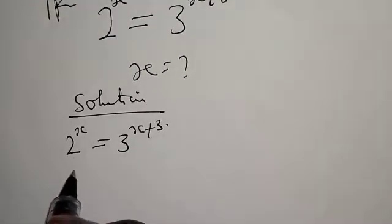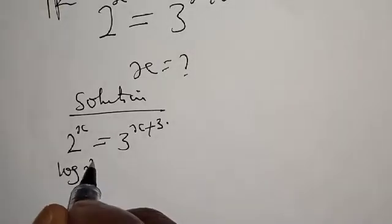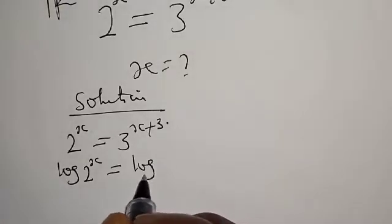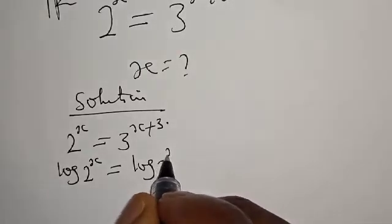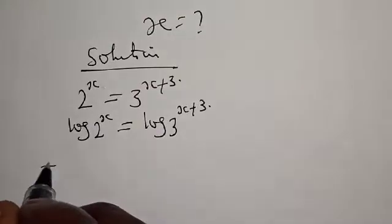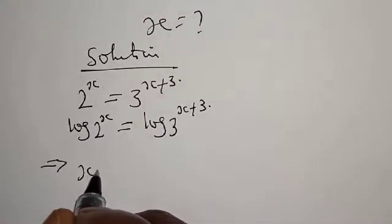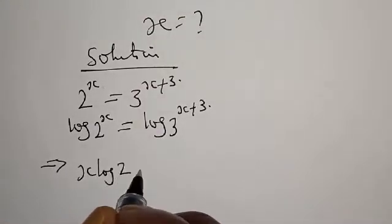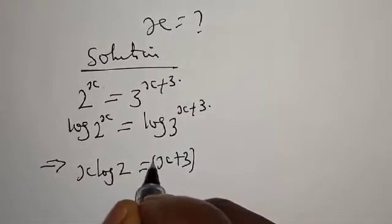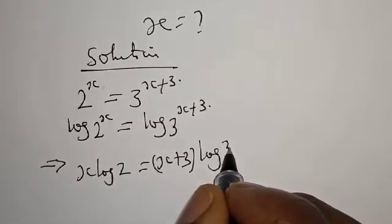I will take the log of both sides. Log of 2 raised to power x is equal to log of 3 raised to power x plus 3. This can be written as x log 2 is equal to x plus 3, log 3.